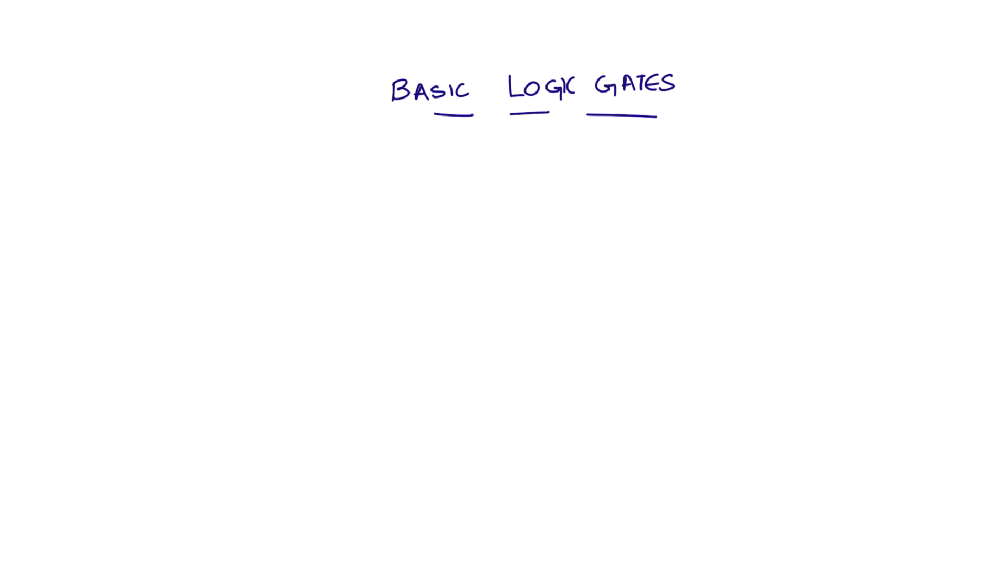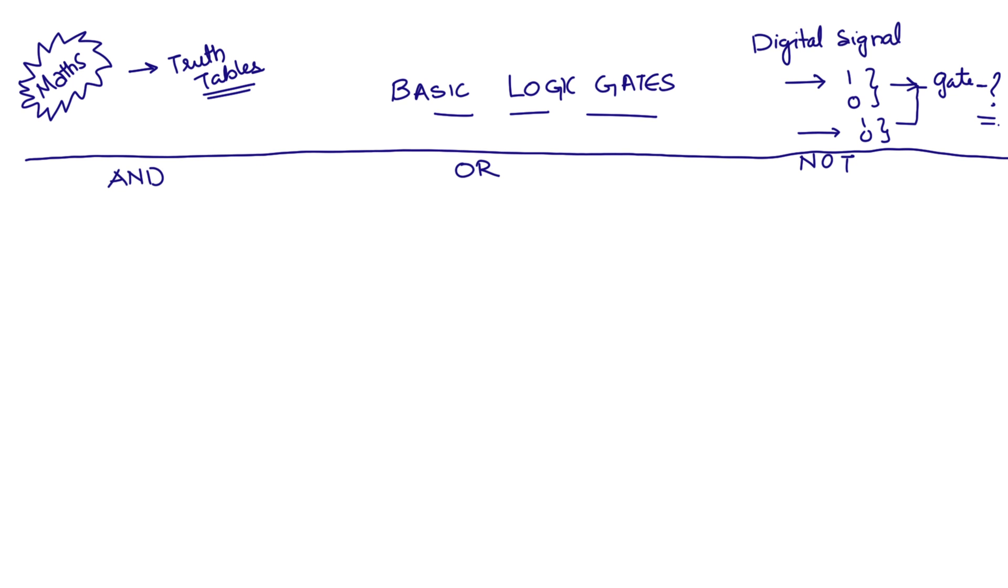The basic logic gates available to us are AND, OR, and NOT logic gates. Now, we're going to write the outputs of these signals into something called truth tables. This would be really easy if you can think of the truth tables that you did in school math exams. So a digital signal can consist of 1 and 0. When signals 1 and 0 pass through the gate, what is the output of AND, OR, and NOT?